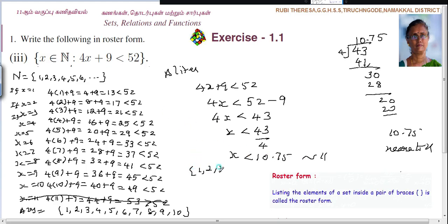But they have said that it is natural number. That means what? 1, 2, 3, 4, 5, 6, 7, 8, 9, 10. So this is the answer.